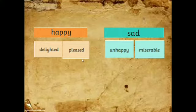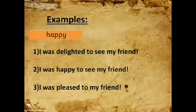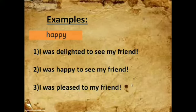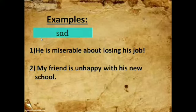For happy, you could say delighted or pleased. For sad, you could say unhappy or miserable. For example, I was delighted to see my friend, or I was happy to see my friend, or I was pleased to see my friend. By the way, an adjective can also describe a feeling — I was happy, I was delighted, I was pleased. For sad: he is miserable about losing his job, or he is sad about losing his job. My friend is unhappy with his new school.